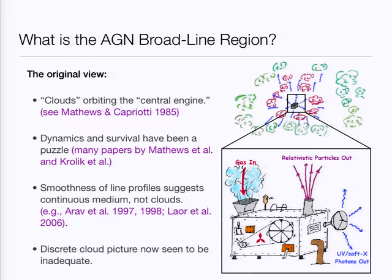Observational tests came a little later. The smoothness of the line profiles is one of the main observational constraints, and reverberation mapping has provided further constraints. The smoothness of the line profiles suggests that we're looking at a continuous medium, not a collection of discrete clouds. Today, we think that the discrete cloud picture is inadequate. If we want to continue to think of clouds in a heuristic picture, that's fine — but they're better thought of as density enhancements in an otherwise continuous medium.